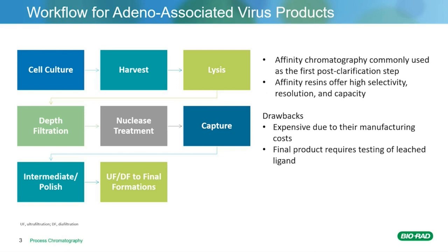Here's a standard workflow for AAV products. You have your cell culture, harvest, lysis, depth filtration, and the nuclease treatment. Once that happens, you then will capture. Typically, it is an affinity right now, followed by an intermediate polish step, and then the final UFDF. The affinity resin is most commonly used. It offers high selectivity resolution and capacity. However, it is expensive due to its manufacturing costs, and the final product often requires testing of the leach ligand to show that it is removed.